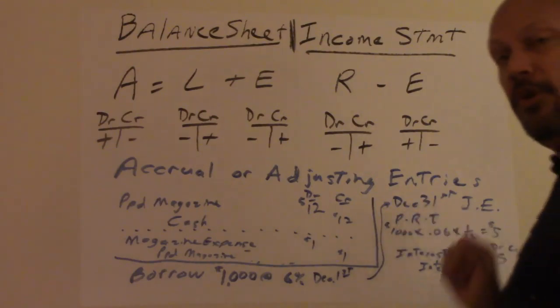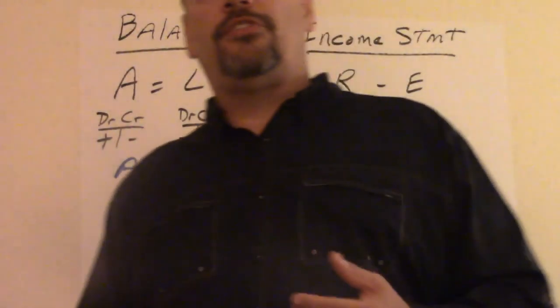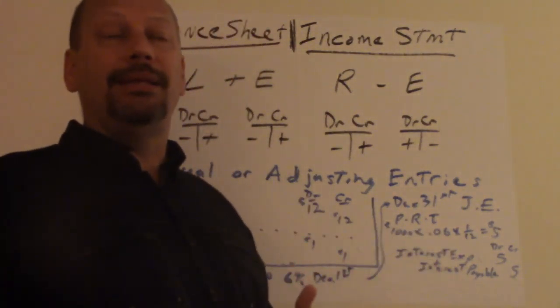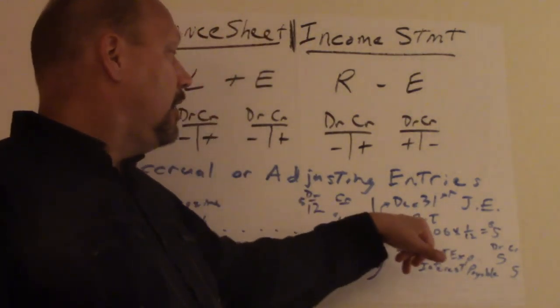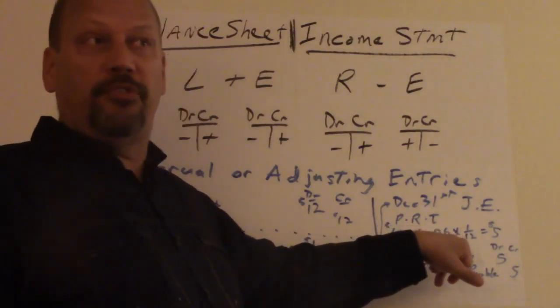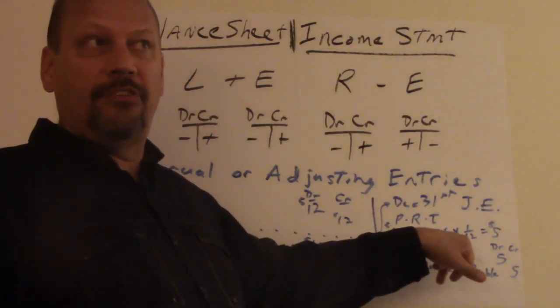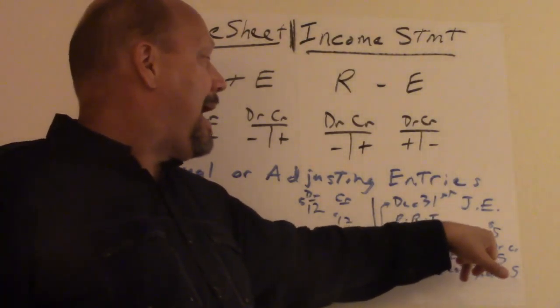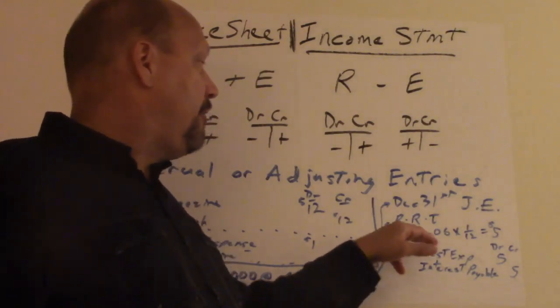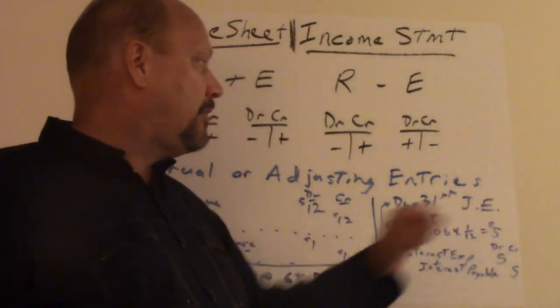So you compute that by PRT. You should have learned this in finance. If you haven't yet, I'm teaching you now. Principal times rate times time, PRT. The principal is $1,000. That's what you borrowed. The rate is 6%. To convert that to a decimal, it's 0.06. And it's for one month, so 1 over 12, 1 divided by 12. If you were to calculate that out, that comes up to $5.